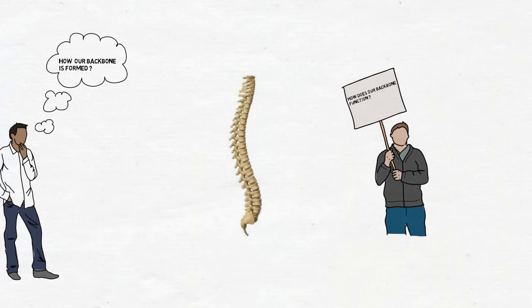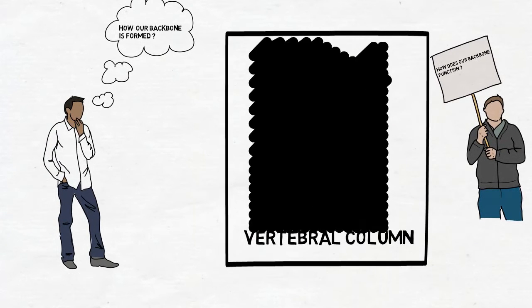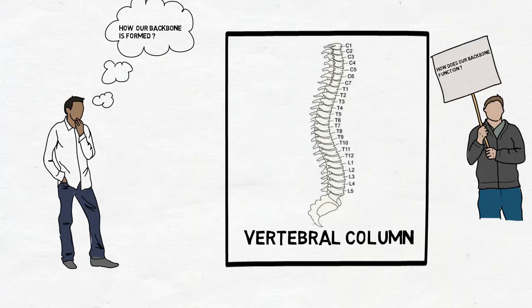So this is our backbone in a 3-dimensional structure and the component that forms our backbone is called a vertebra. Let's see a 2-dimensional image to understand it a little better. And boom! This is the 2-dimensional structure of our vertebra or backbone.